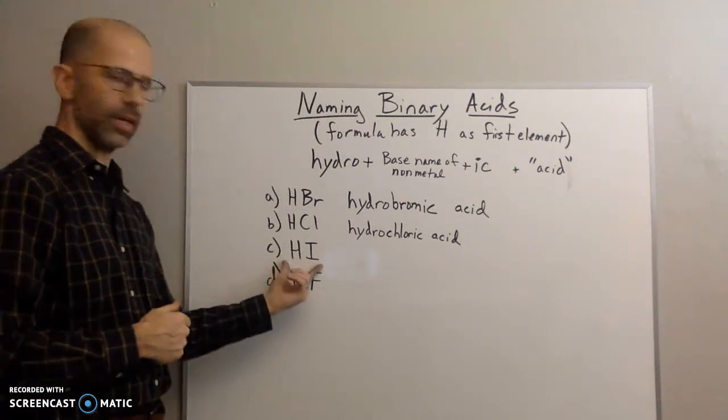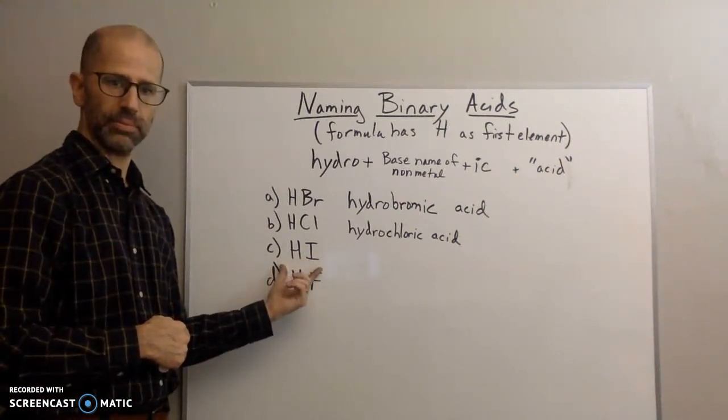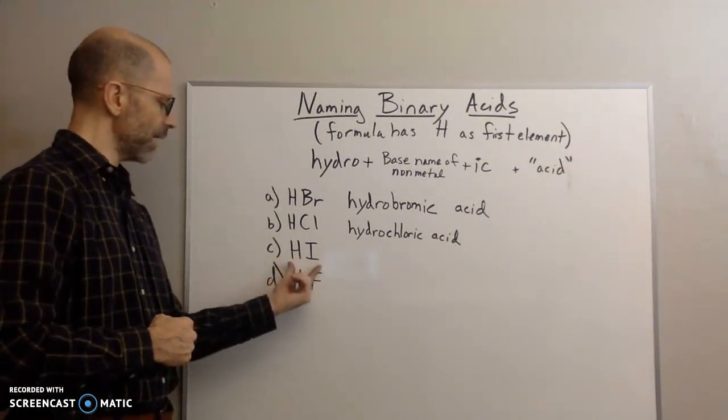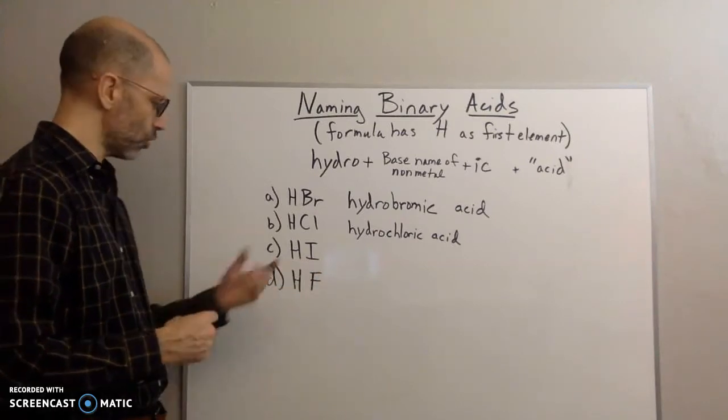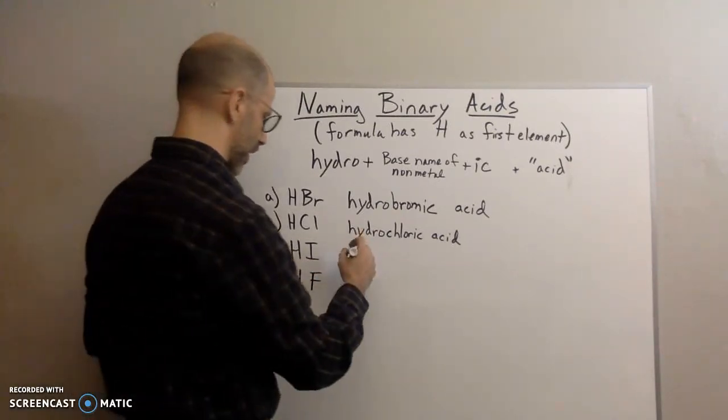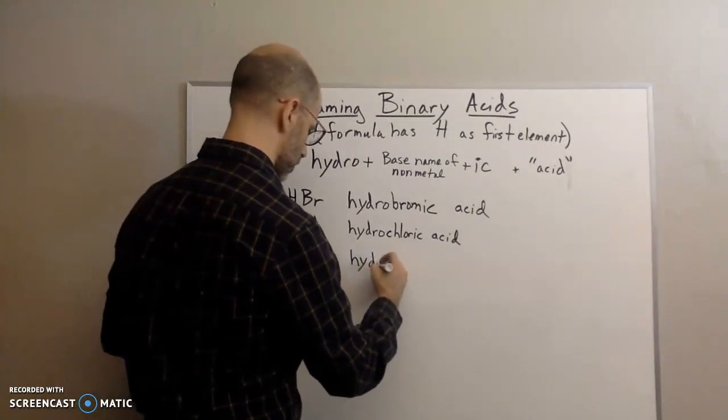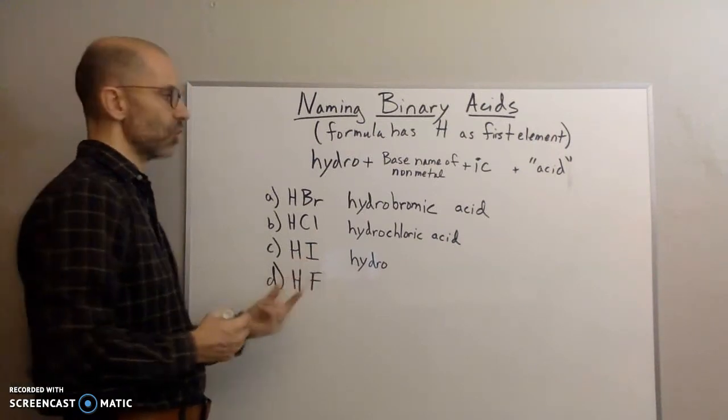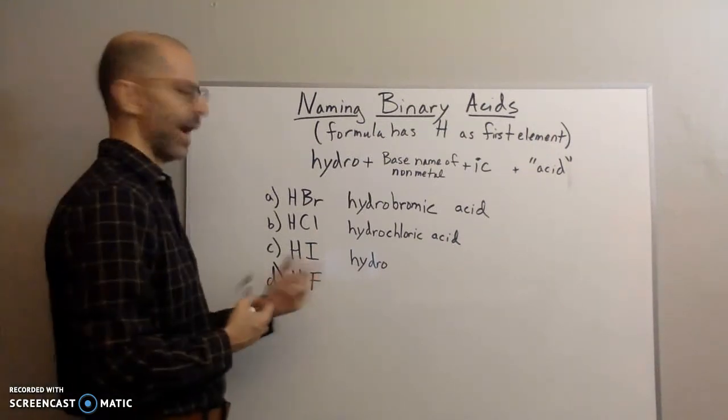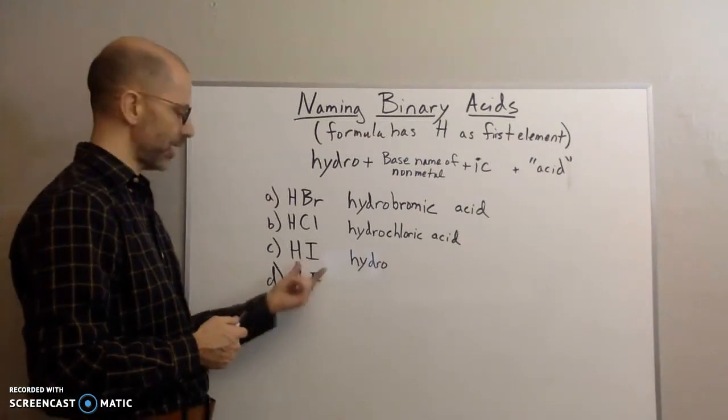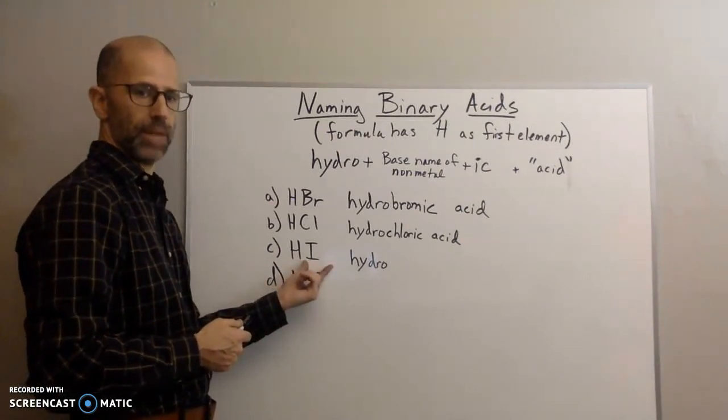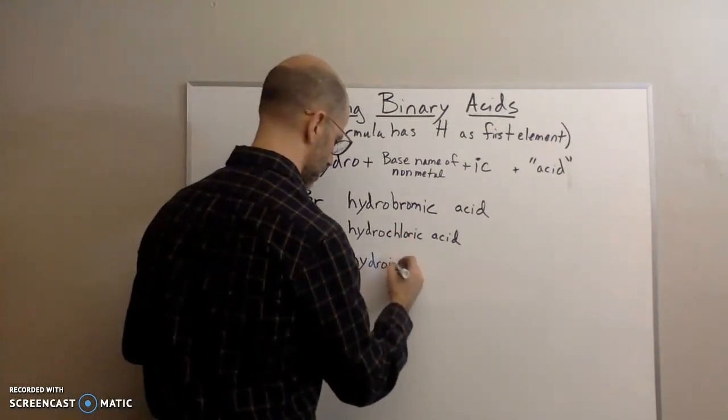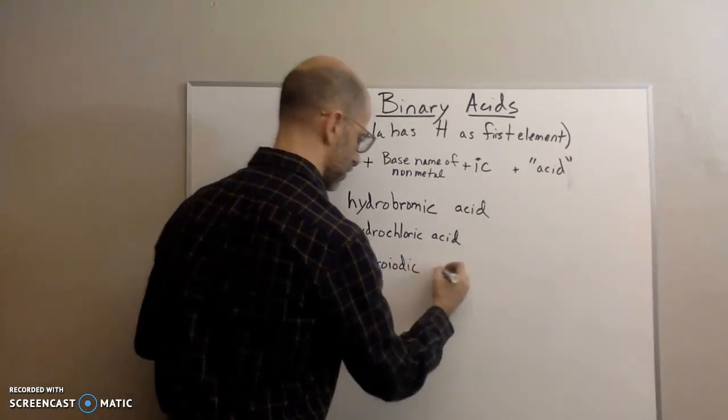What about this one? Can you name this one? Okay, let's go over it. So again, H-I, binary. So the first is hydrogen, so we're going to write hydro. This is iodine, so we're going to drop the ending, add ick, so iodine becomes iodic. So this becomes hydro-iodic acid.